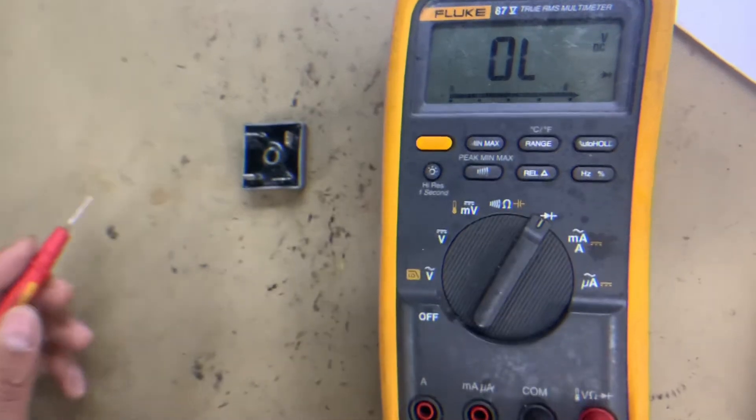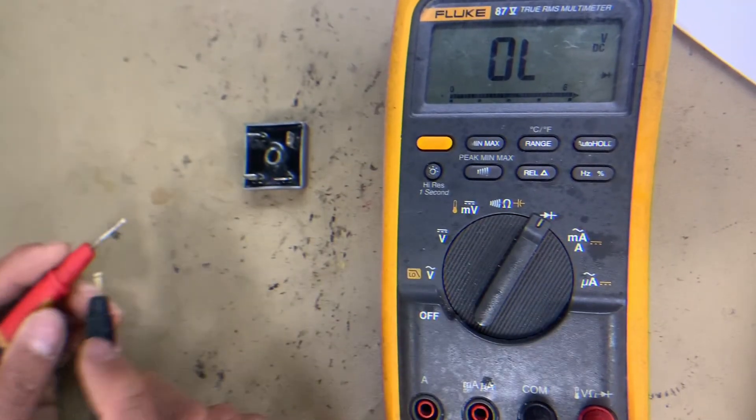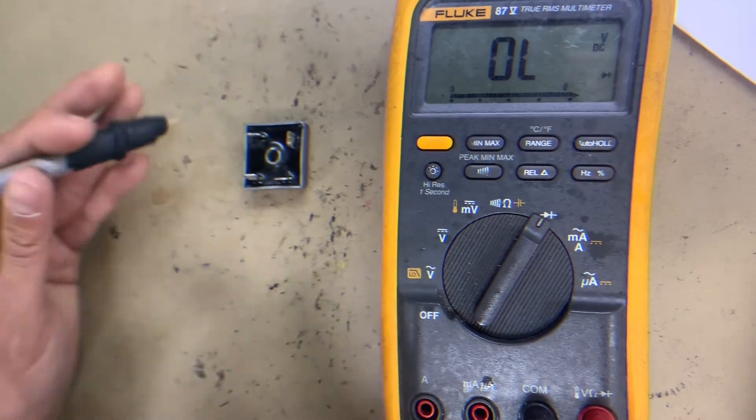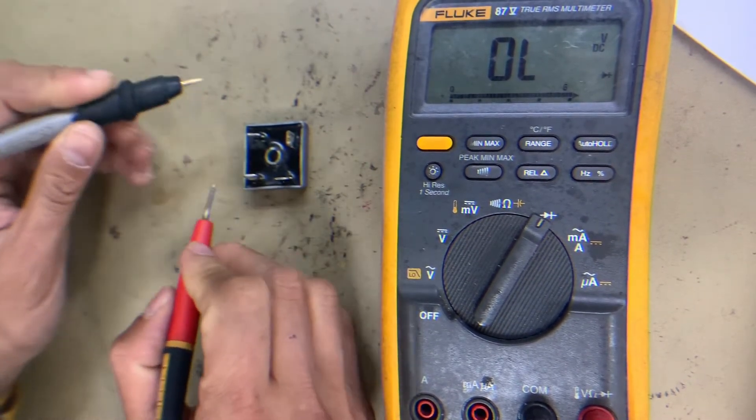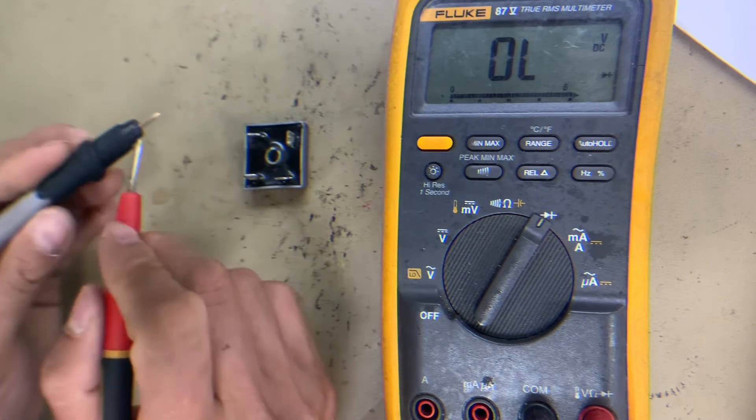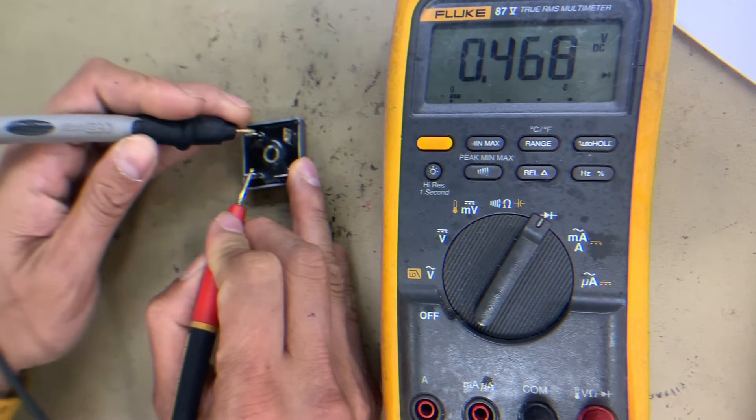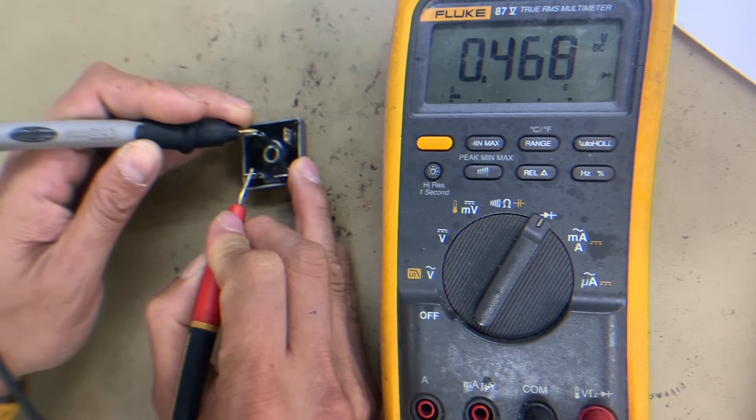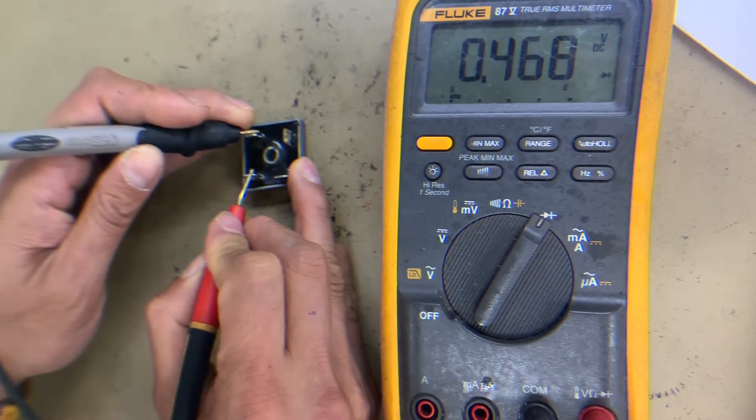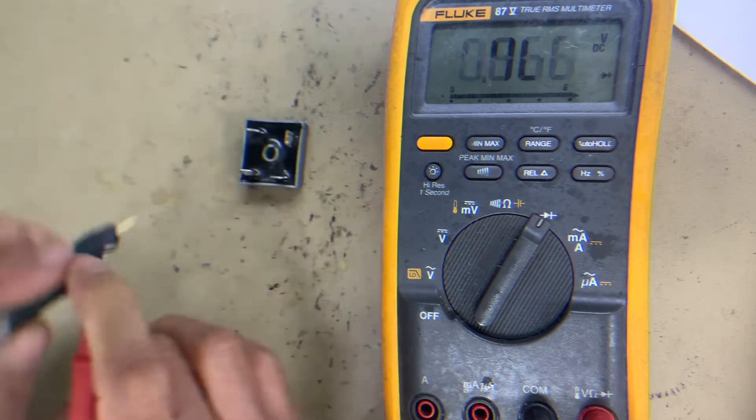In the first test, black probe on the anode and red probe to the cathode, then red probe to the anode, black probe to the cathode. The reading is 0.468, this is diode one. Then inverse.